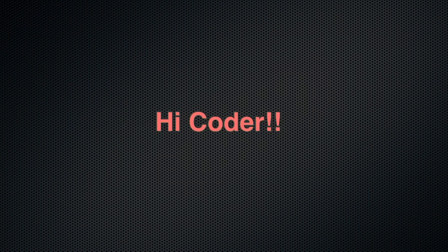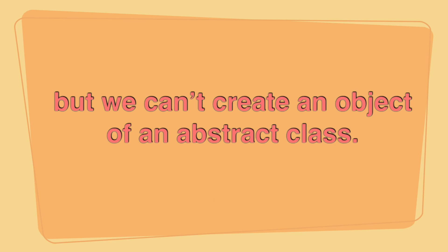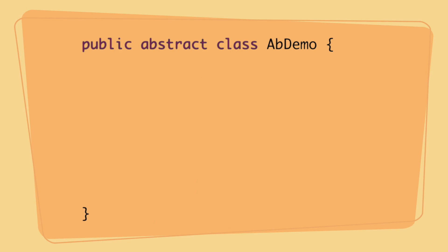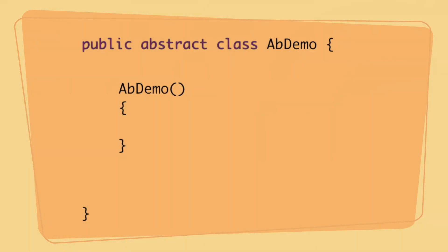Hey everyone, today I have a very interesting interview question for you. We know that an abstract class can have a constructor, but we cannot create an object of an abstract class. So if we cannot create an object, why are we allowed to write a constructor inside an abstract class? What is the importance of that constructor? Hi everyone, I'm Avilaaj from Selenium Express — let's get started.